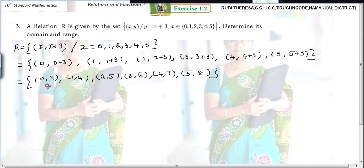What is domain? Domain is nothing but the first element of the ordered pair. Domain of R equals the set of all first coordinate elements. It's not compulsory to write that sentence; just understand and write the answer. The first elements are 0, 1, 2, 3, 4, 5.